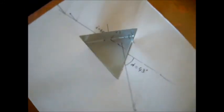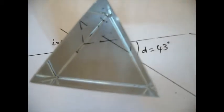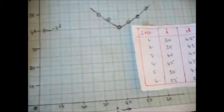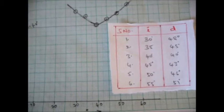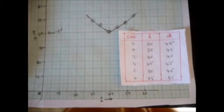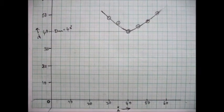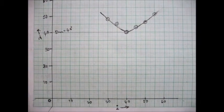The readings are entered in the table form and a graph is plotted taking angle of incidence on the x-axis and the deviation on the y-axis, and the minimum value is named as angle of minimum deviation, and from that we can calculate the refractive index of the prism.